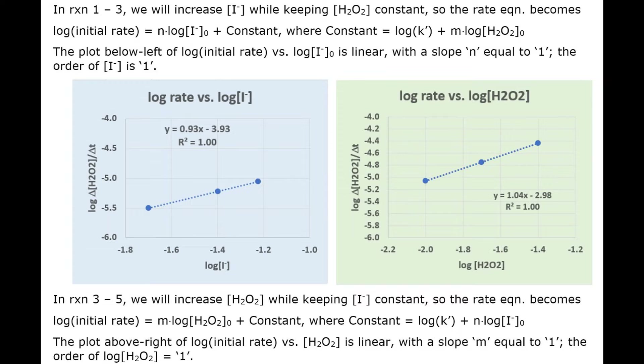In part A, the reaction rate with respect to iodide is determined by conducting several experiments in which the concentration of peroxide is kept constant. This is the graph on the left, and iodide concentration is increased.